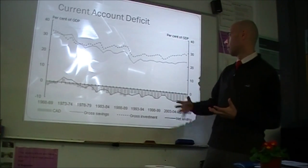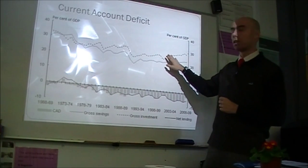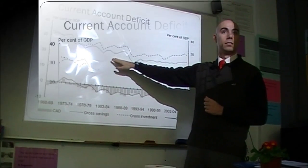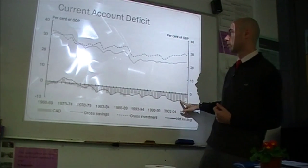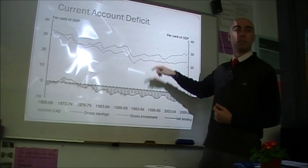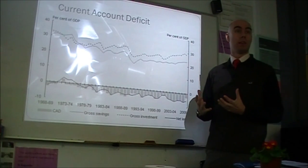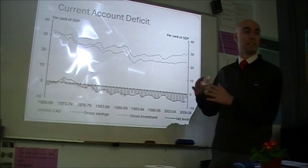Let's look at why the current account deficit happens. Here we've split out gross savings — the solid line — and gross investment — the dotted line. For the last four decades since we've had current account deficits, investment is higher than savings. That means the amount of investment required in Australia cannot be paid for with domestic savings alone. Firms have to go overseas to supplement domestic savings, and that leads to a current account deficit. Investment minus savings — I minus S — is your current account deficit.